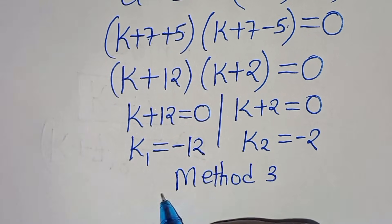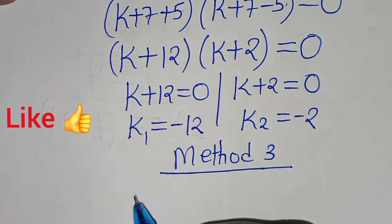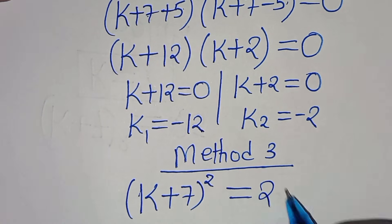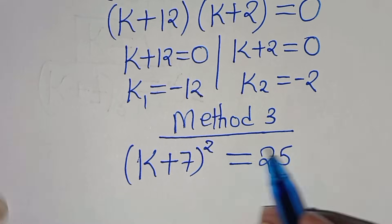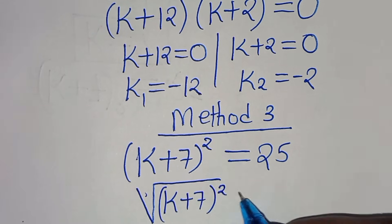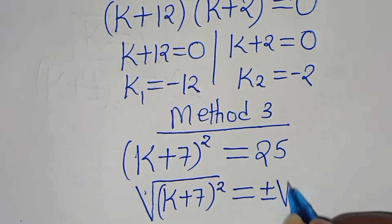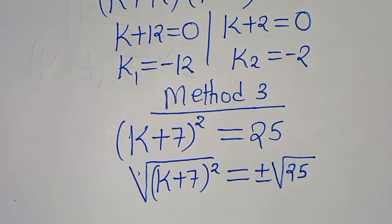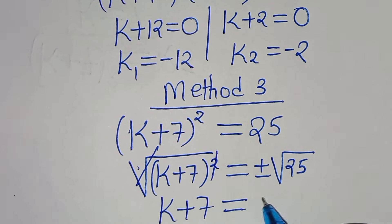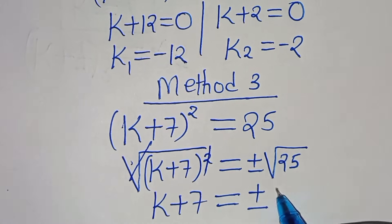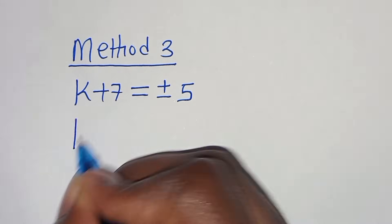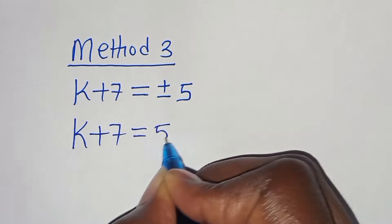Now in Method 3, we have k plus 7 raised to the power of 2, this is equal to 25. Here we apply the square root on both sides, so that we have the square root of (k+7)² equals plus or minus the square root of 25. Removing the square root sign, we have k plus 7 equals plus or minus 5.